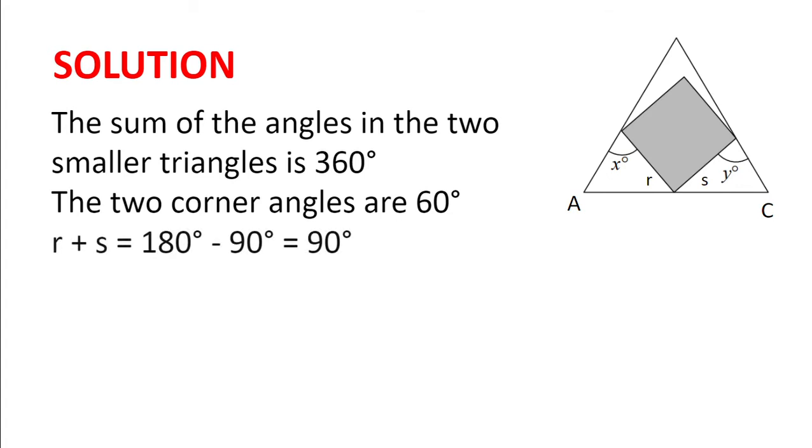Now, the sum of angles R and S, R plus S, is 180 degrees minus 90 degrees, which is 90 degrees, because angles on a straight line sum to 180, and the angle of a corner of a square is 90 degrees.